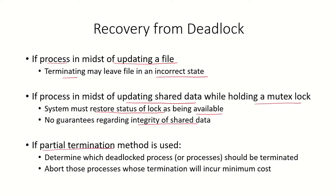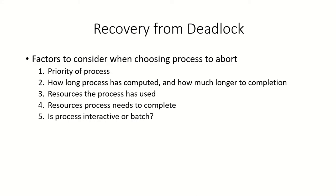If we use the method of partial termination, that means we are terminating only one process at a time. Out of all the deadlocked processes we have to determine which deadlocked process should be terminated, and the strategy would be to abort that process first whose termination will incur the minimum cost. When we are terminating a process there are various factors associated with it — how much computation it had already done, what is the priority of that process — so with each process there is some cost associated.